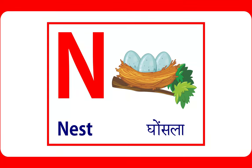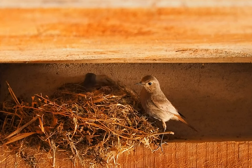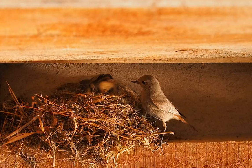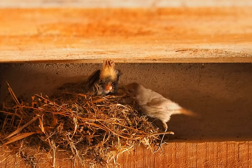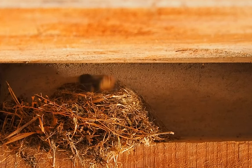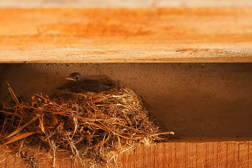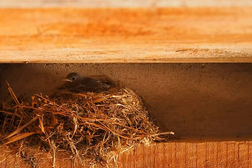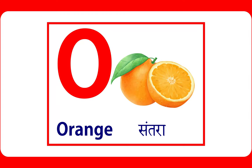N is for nest. Birds use a nest for their eggs. O is for orange. Orange is a fruit.